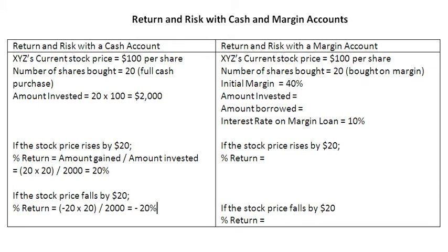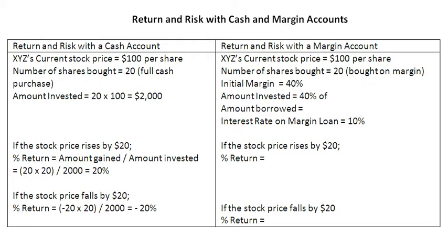Now let us repeat the exercise, keeping everything else the same, just this time these 20 shares are being bought on margin. Let us assume that the initial margin requirement is 40%. That means 40% of the total purchase price is going to be contributed by the investor. The total purchase price is 20 times $100, that is $2,000. And 40% of those $2,000 — that is $800 — is going to be contributed by the investor. The rest, $1,200, are going to be taken out as a margin loan from the broker, which will need to be returned with interest.